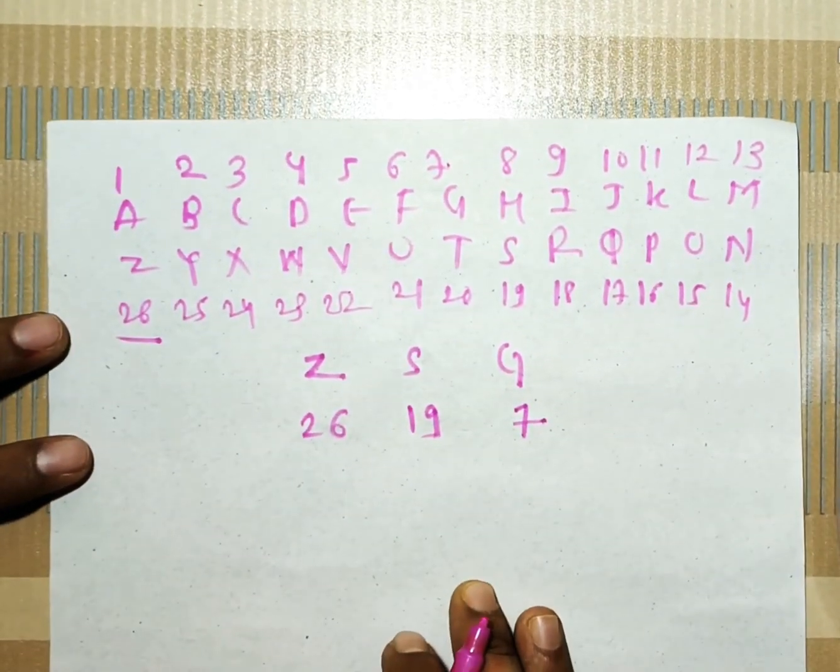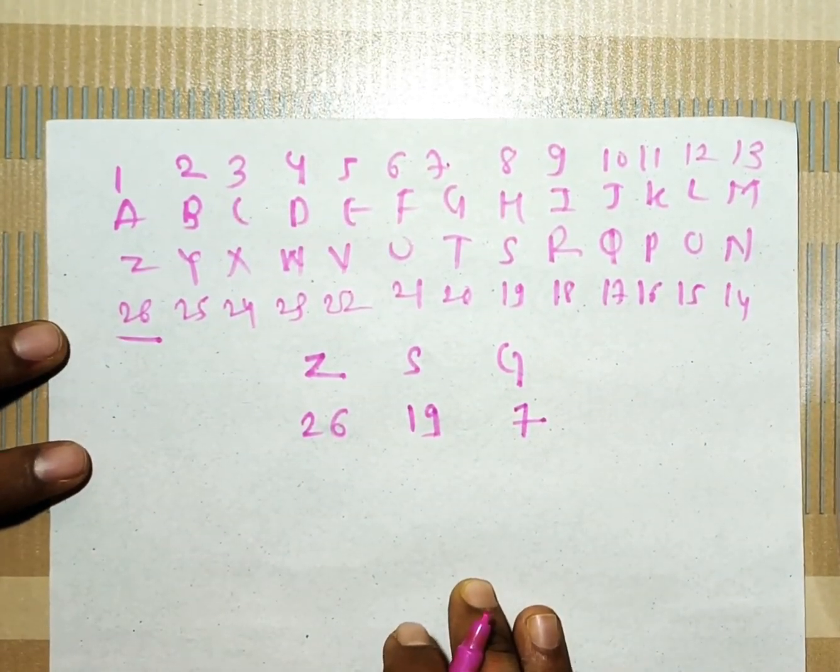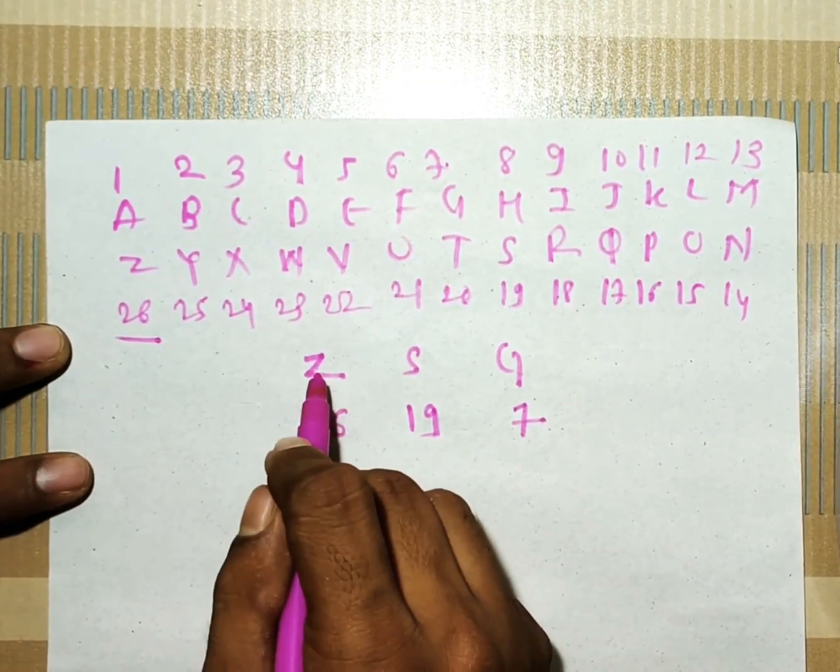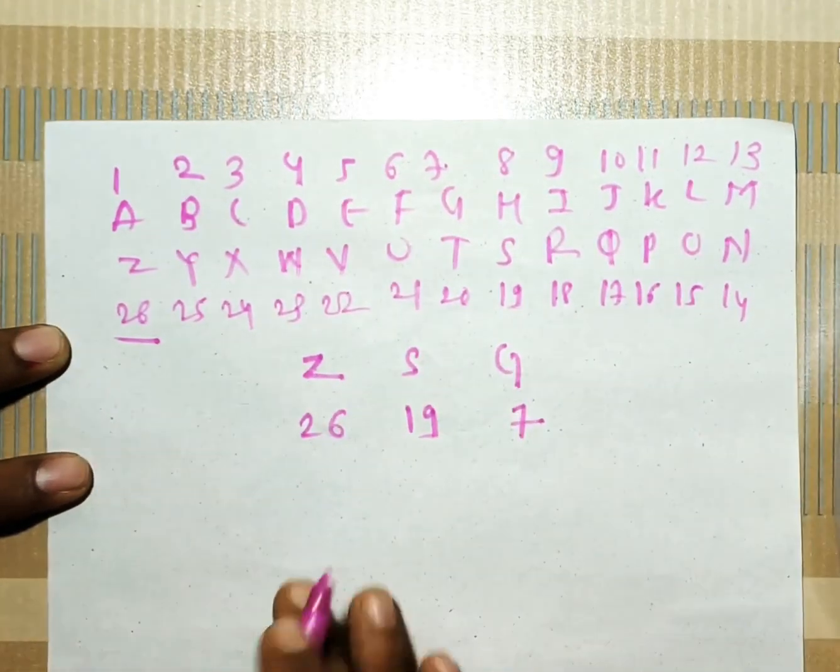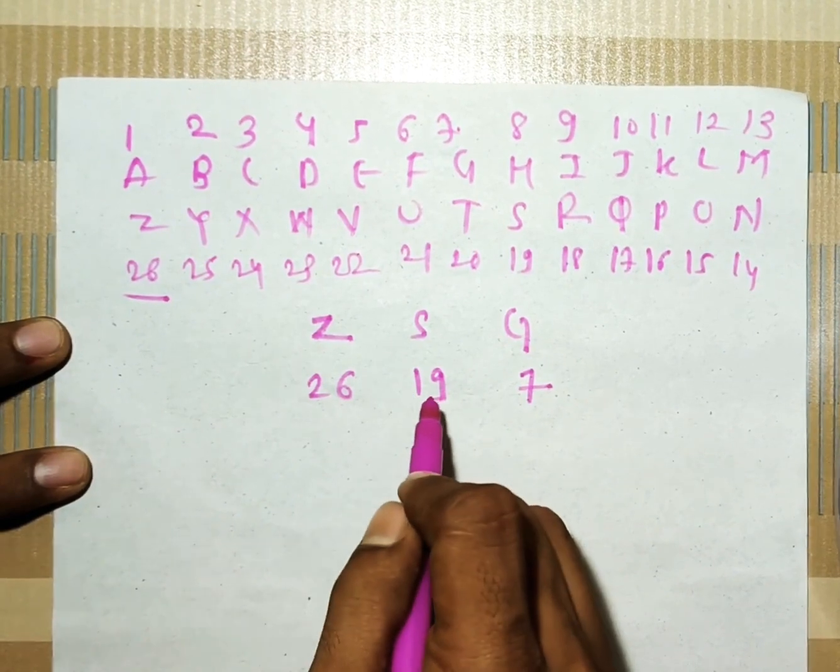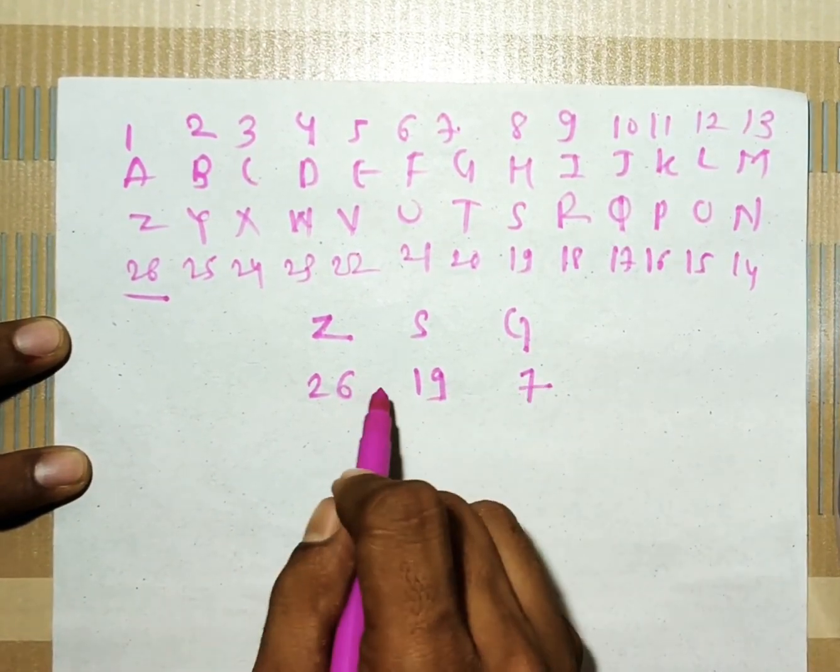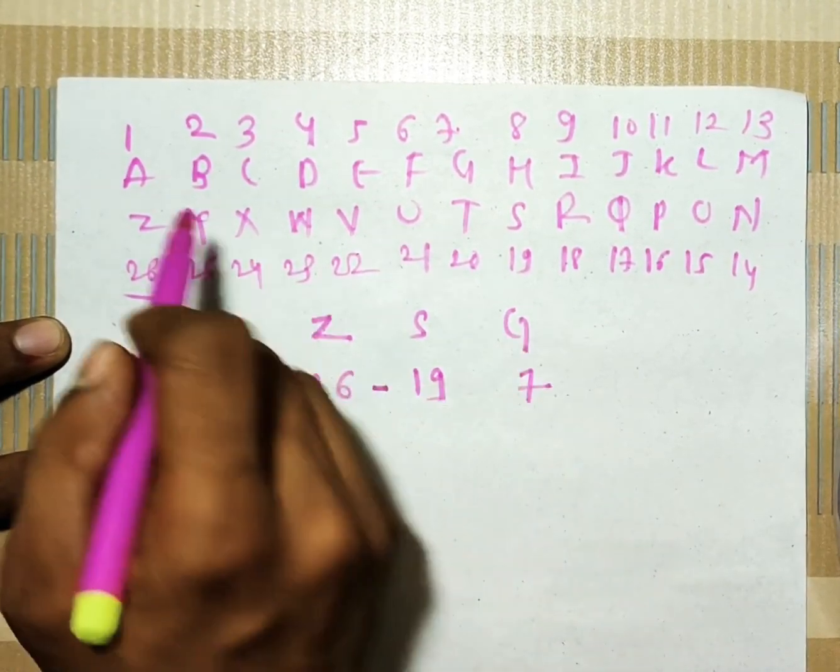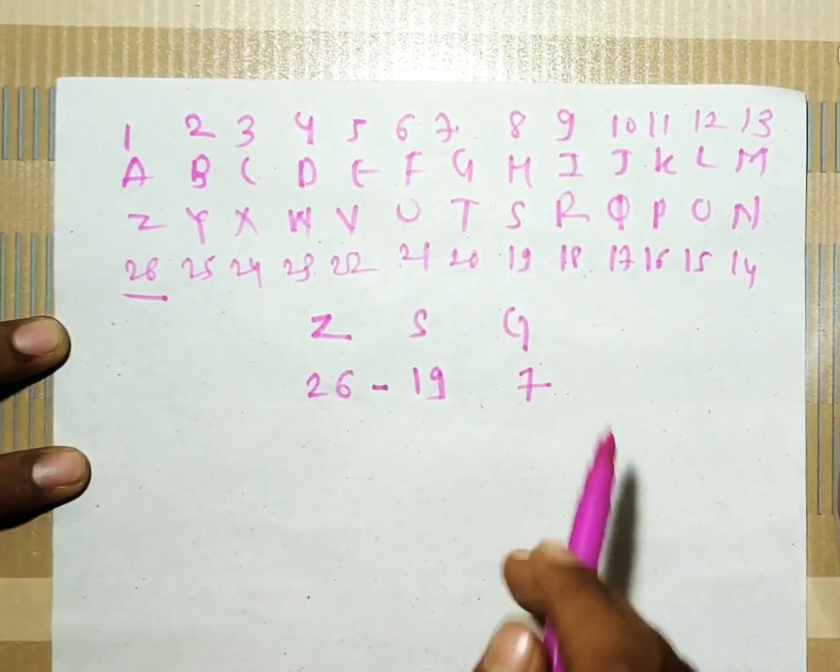Okay, so let's see. If you observe these letters then we can conclude that by subtracting Z by S we are getting G here. How? Let's see. 26 minus 19 is 7. So at the 7th position G is there. That's why G comes here.